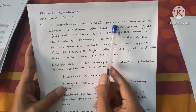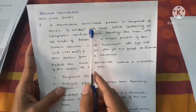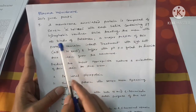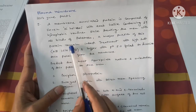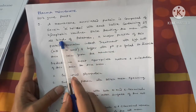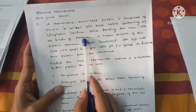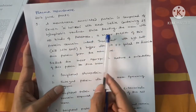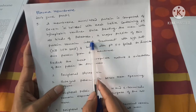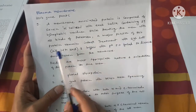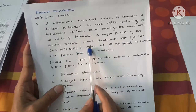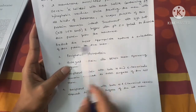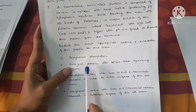Another question from plasma membrane, 2017 June: a membrane-associated protein is composed of seven alpha helices, with each helix containing 19 hydrophobic residues. When treated with all kinds of proteases, a major portion of this protein remains intact. In a second experiment, treatment with high salt — 1.5 molar NaCl buffered at pH 5 — failed to dissociate this protein from the plasma membrane. Predict the most appropriate nature and orientation of this protein.